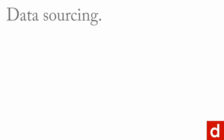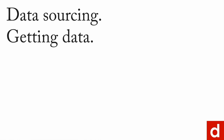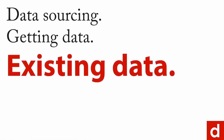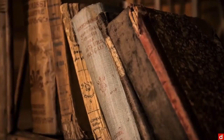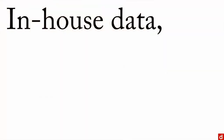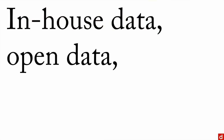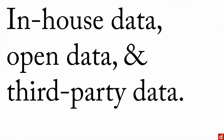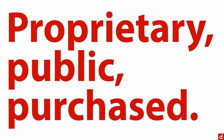When it comes to data sourcing, obviously the most important thing is to get data. The easiest way, at least in theory, is to use existing data — think of it as going to the bookshelf and getting data that's right there at hand. There are a few different ways to do this: you can get in-house data, open data, and third-party data. Another nice way to think of that is proprietary, public, and purchased data — the three P's.